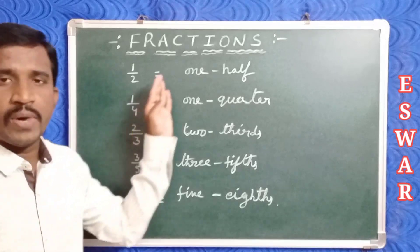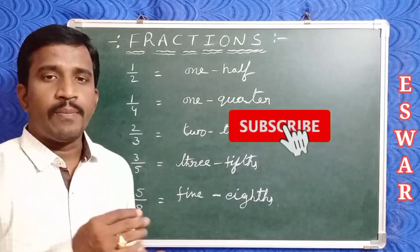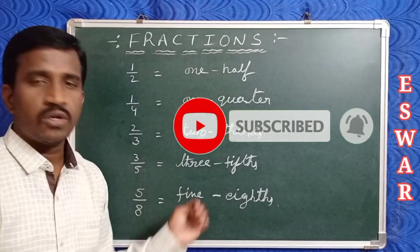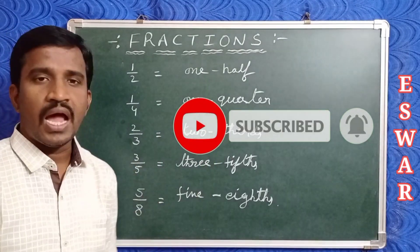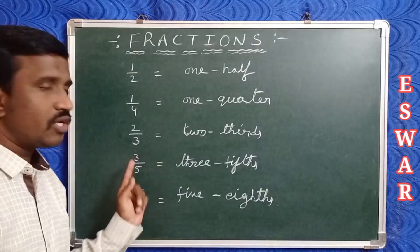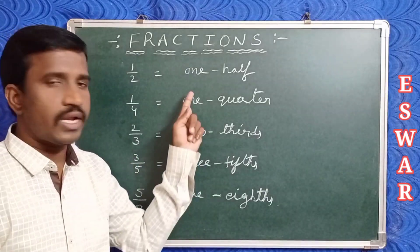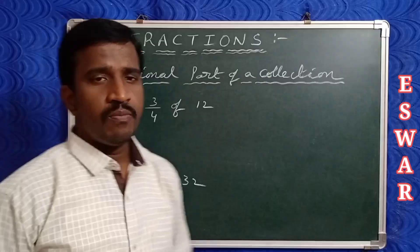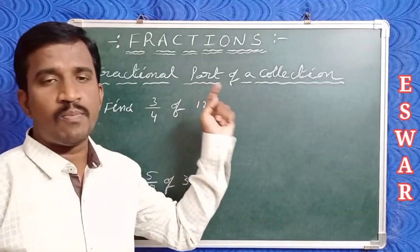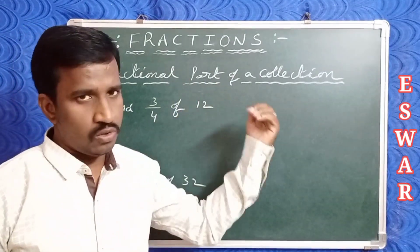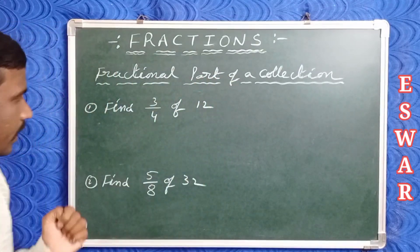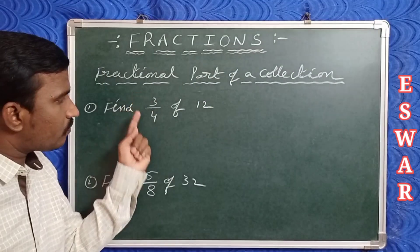The names of fractions are very important. In word problems, when you see one quarter, two thirds, two fifths, you need to convert them into fraction form. Now let's check how to find a fractional part of a collection. For example, find three by fourth of 12.